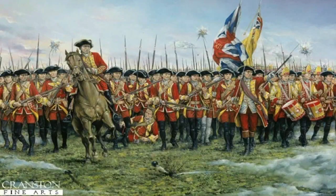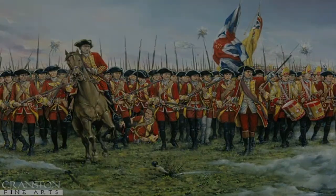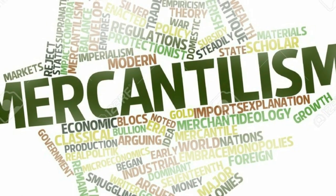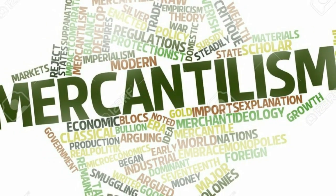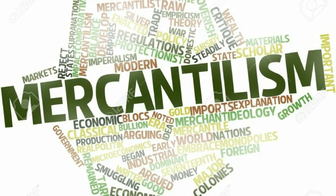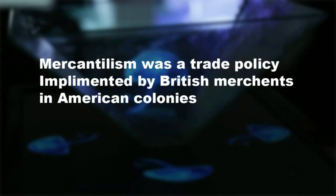As mentioned earlier, the British intention was exploitation — they wanted to exploit the resources from the American colonies. For that, they implemented several policies, and among them the most important was the Mercantilist policy. Mercantilism is a trade policy implemented by the British merchants in the American colonies.